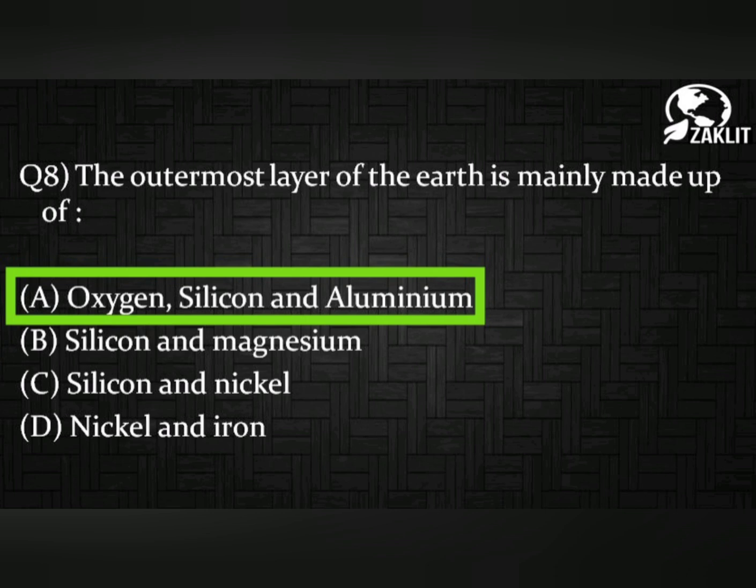The next question was: the outermost layer of the earth is mainly made up of — it is asking about the crustal part of the earth. The correct option is option A: oxygen, silicon, and aluminium. These are the elements present in the crust.